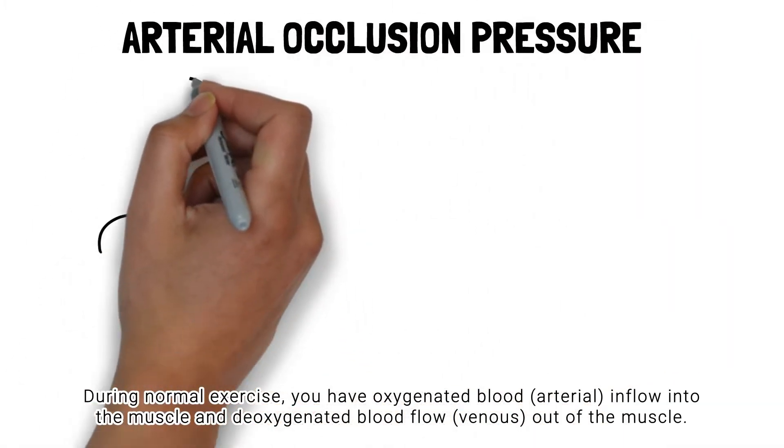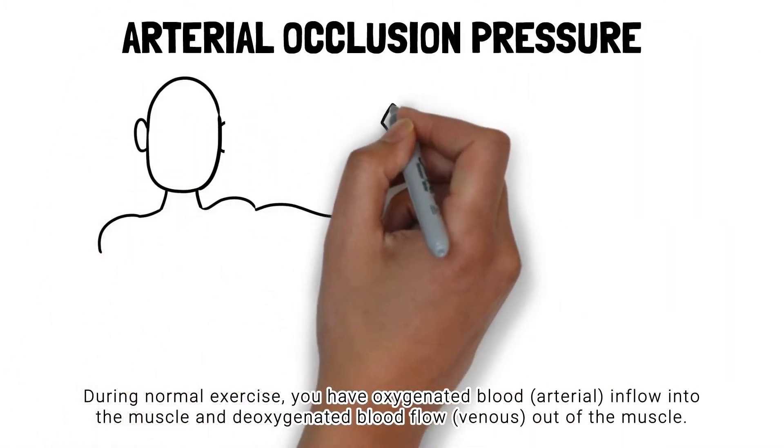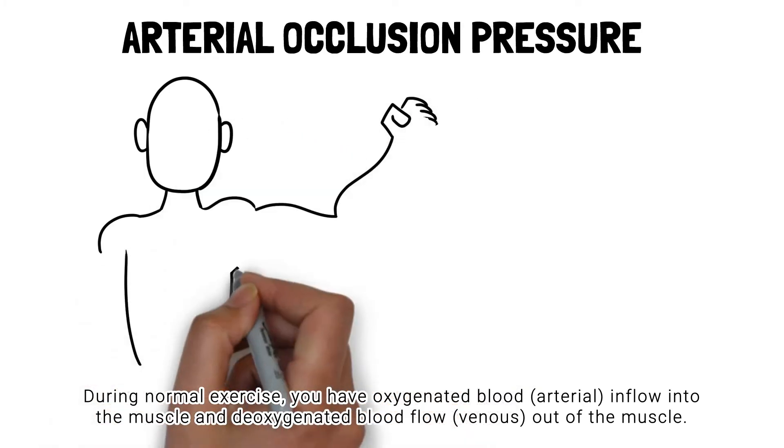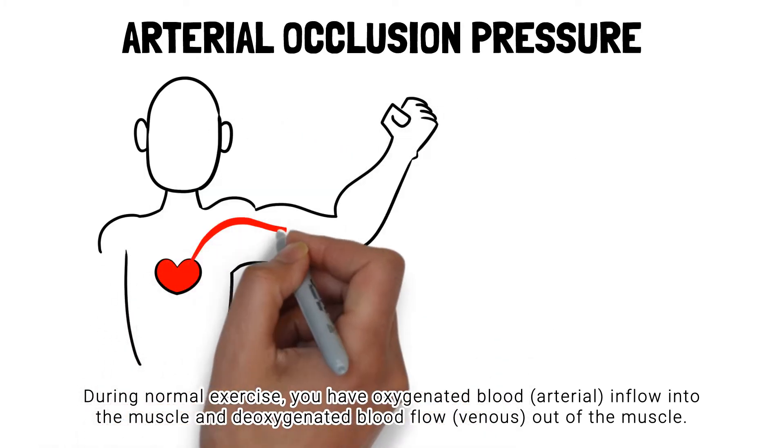During normal exercise, you have oxygenated arterial blood flow into the muscle and deoxygenated venous blood flow out of the muscle.